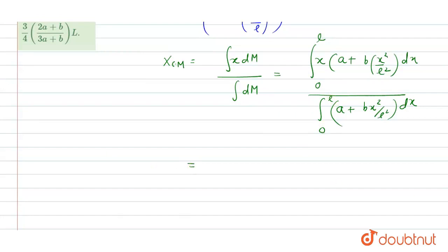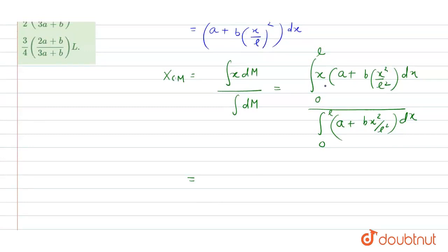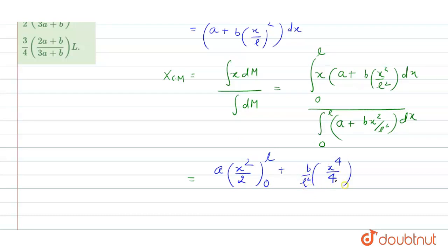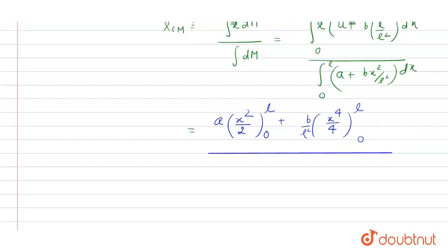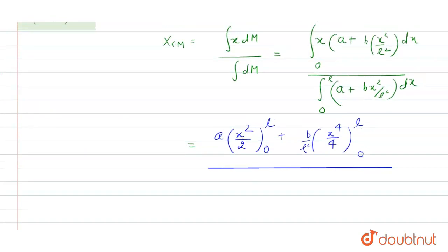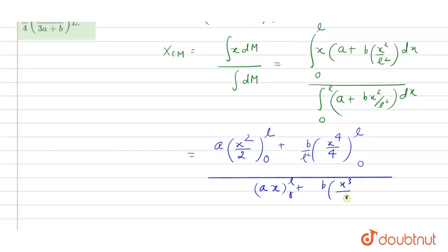Performing the integration: in the numerator, integrating ax gives ax²/2, and integrating bx²/l² gives bx³/(3l²), with limits from 0 to l. In the denominator, integrating a gives ax, and integrating bx²/l² gives bx³/(3l²), with limits from 0 to l.